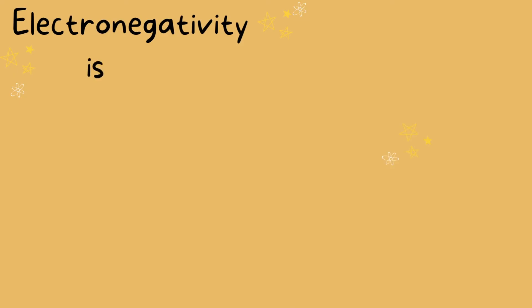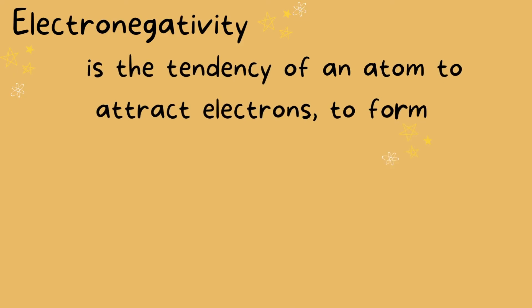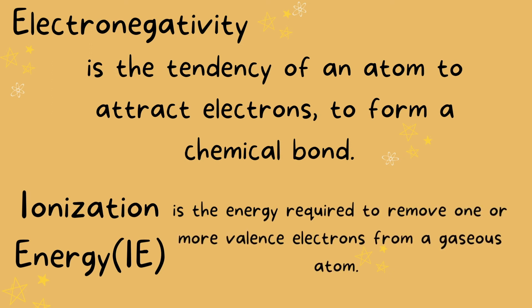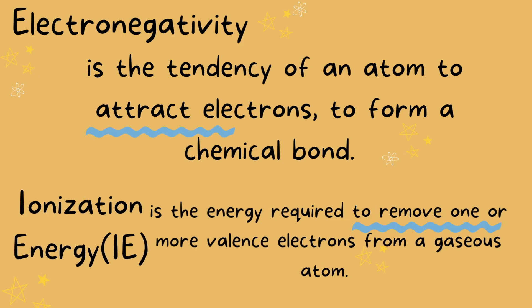Moving on to our very last trend on the periodic table: electronegativity. Electronegativity is the tendency of an atom to attract electrons to form a chemical bond. I think it's helpful to see a side-by-side definition of electronegativity and ionization energy, because these two can easily be confused. Notice that the key word in electronegativity is 'attract electrons,' and in ionization energy, the key word is 'to remove electrons.'